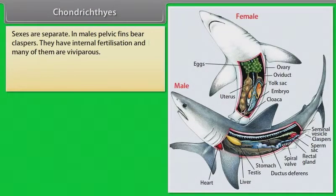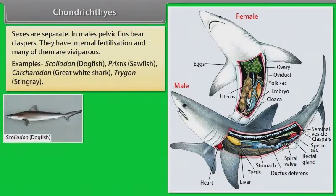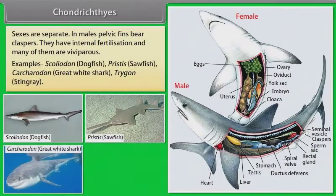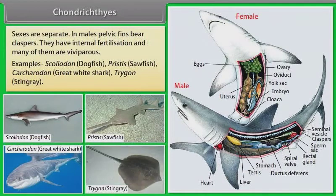In males, pelvic fins bear claspers. They have internal fertilization and many of them are viviparous. Examples: Scoliodon (Dogfish), Pristis (Sawfish), Carcharodon (Great White Shark), Trigon (Stingray).